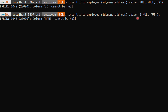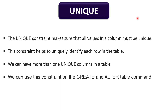Our next constraint is UNIQUE. We use the unique constraint when we want each value of a column to be unique — that is, values in any row of a column must not be repeated. If a column's value is unique, we can easily identify each row of a table. Like in different tables we have an id column which stores unique values, so we can easily find any record. We can also have more than one unique column in a table, and we can specify the unique constraint at the time of creating or modifying the table.